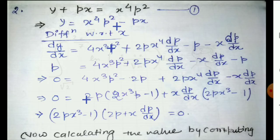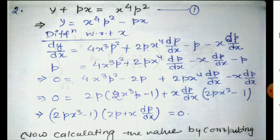We work with the terms involving 4p² and dp/dx − x·dp/dx, obtaining two factors: 2px³ − 1 and 2px·dp/dx.